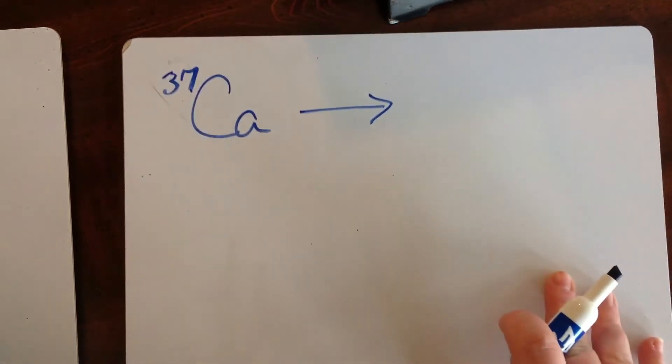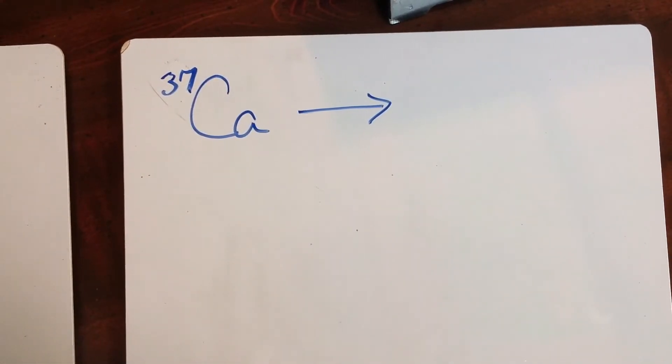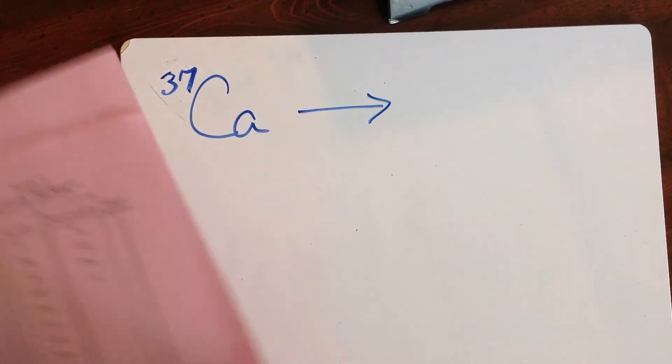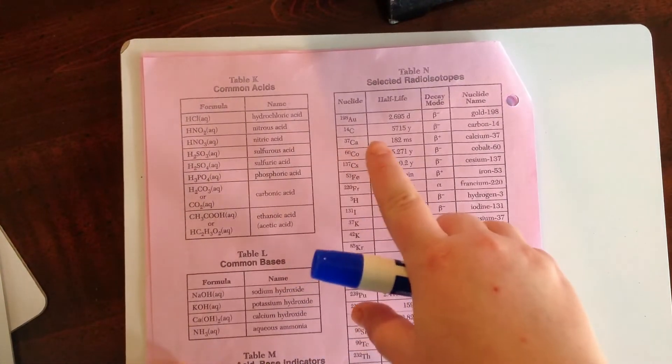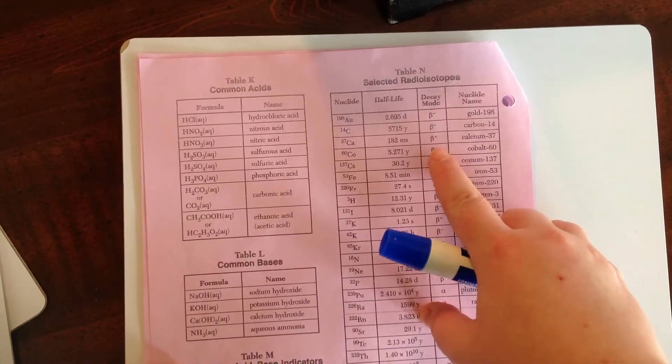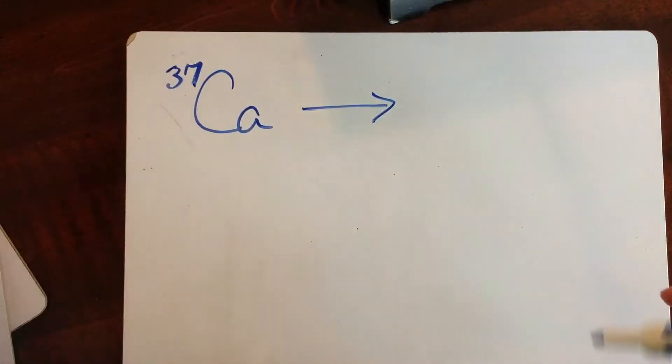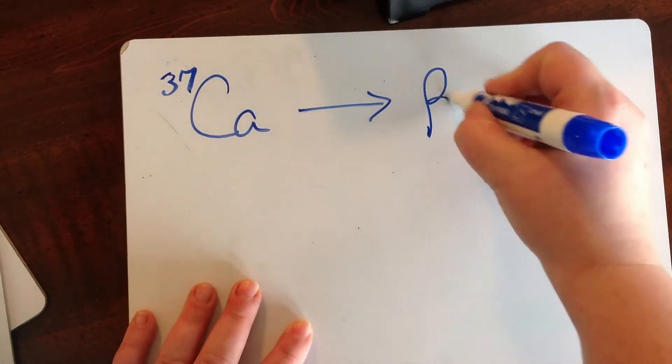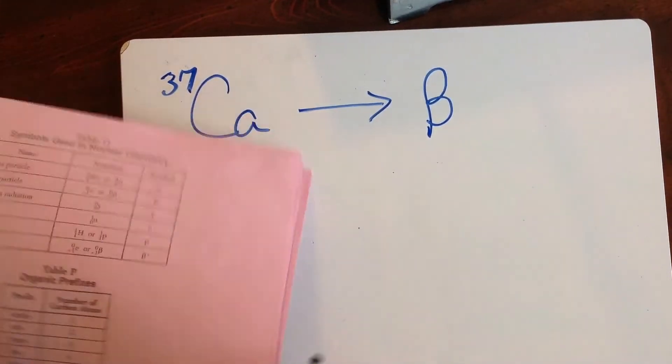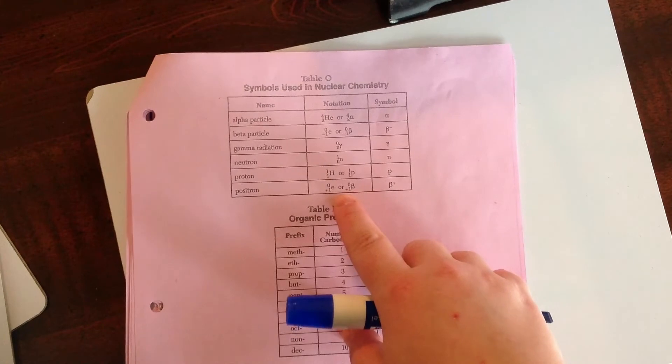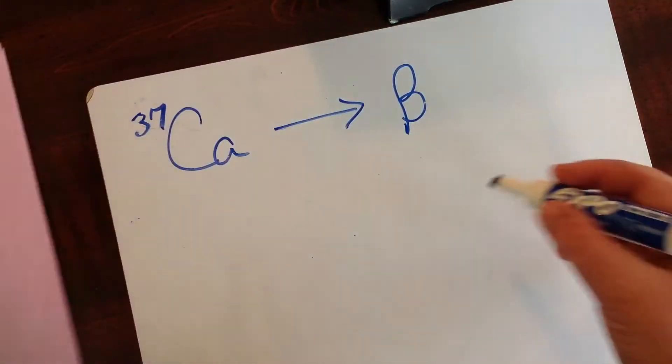Calcium 37. Again, looking at table N, we can see that calcium 37 undergoes the little beta with a plus sign, so positron decay. So beta symbol. Again, looking at table O, that positron is a plus 1 on the bottom, a 0 on the top.